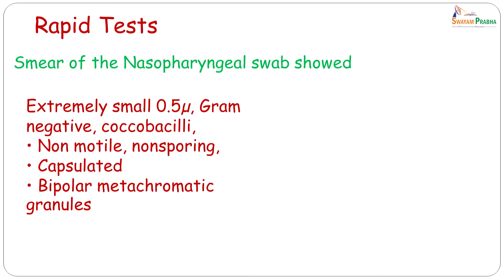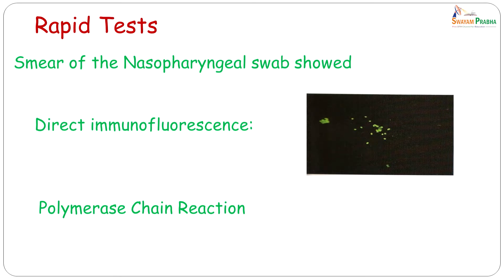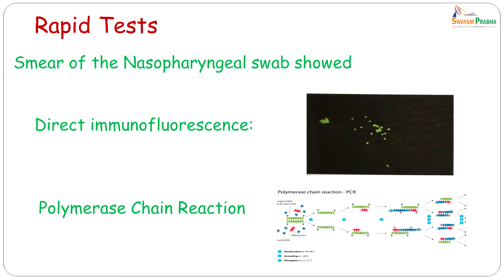Once we received the sample, a smear of the nasopharyngeal swab stained by Gram's method showed small Gram-negative coccobacilli which were non-motile, non-sporing, and capsulated. Bipolar metachromatic granules were observed with special stains. The next rapid test was the direct immunofluorescence test, which was positive, and a polymerase chain reaction demonstrated the presence of DNA of Bordetella.